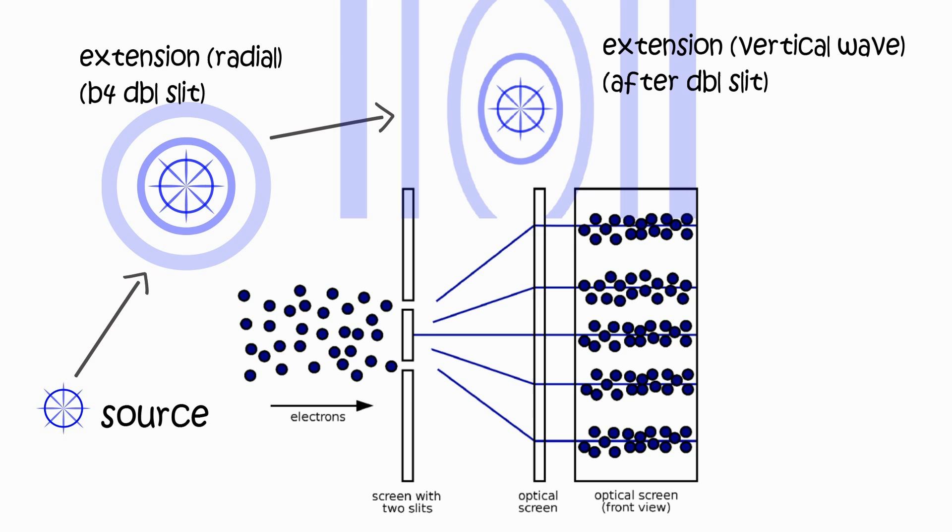Any detection requires electron to focus its momentum to react. At the screen, electron needs to focus all its momentum to react with the screen. Momentum density was distributed out in wave fashion, which determines the probability of where it will focus to.